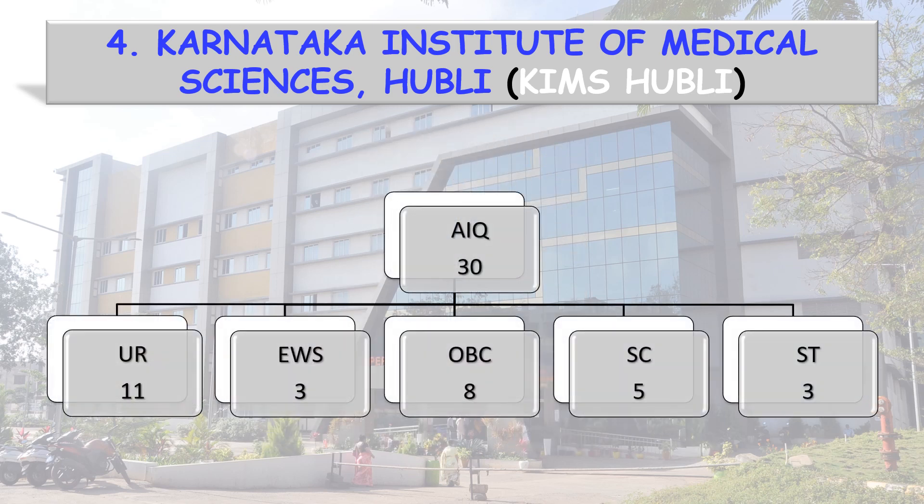All India Quota's 30 seats are divided into 5 categories: Unreserved 11 seats, EWS 3, OBC 8, SC 5, and ST 3.